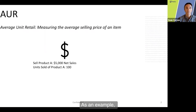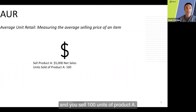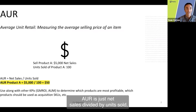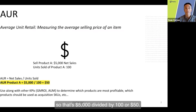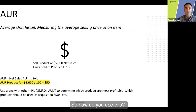As an example, let's say you sell $5,000 worth of product a day and you sell 100 units of product a day. AUR is just net sales divided by units sold. So that's $5,000 divided by 100, or $50. Pretty simple calculation.